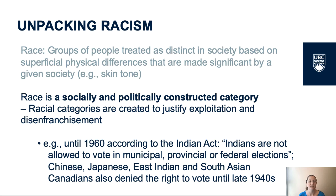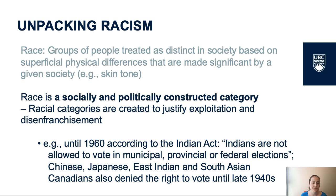For example, until 1960, according to the Indian Act, Indians were not allowed to vote in municipal, provincial, or federal elections. We see here a racial category created and named and placed into law by the colonial government that has an effect on how power and decision making is distributed. Some other examples are how Chinese, Japanese, East Indian, and South Asian Canadians were also denied the right to vote until the late 1940s.